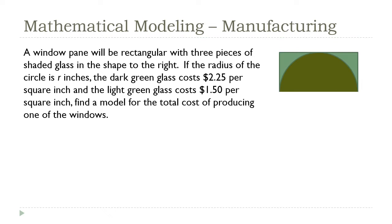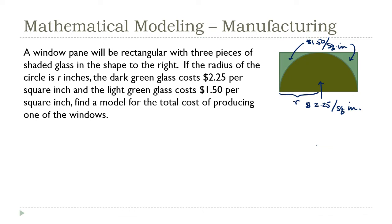Now we have a slightly more complicated situation — a window made up of two different kinds of glass. The dark green glass costs $2.25 per square inch, and the light green glass costs $1.50 per square inch. The question is the same: find a model for the total cost of producing one of these windows. I need to find the area of each piece, multiply by the unit cost, then add the two together. The only variable I'm allowed to use is the radius of the bottom section.